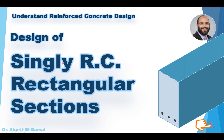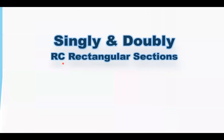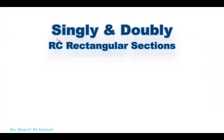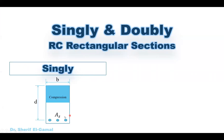Before we go to the design steps of singly reinforced rectangular sections, let's first know about the difference between singly and doubly reinforced rectangular sections. The singly reinforced rectangular section has only reinforcement in the tension side of the cross section. If you have a rectangular cross section with an effective depth d and effective width b, this section will be subjected to bending moment, resulting in tension on one side and compression on the other.